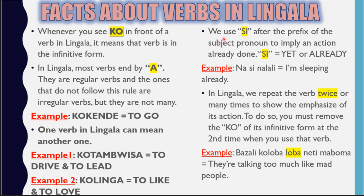Next, we use 'sai' after the subject pronoun to imply an action already done — it's like an extrapolation. 'Sai' means 'yet' or 'already'; that's the direct translation. Example: 'nasi nalali' means 'I'm already sleeping'.